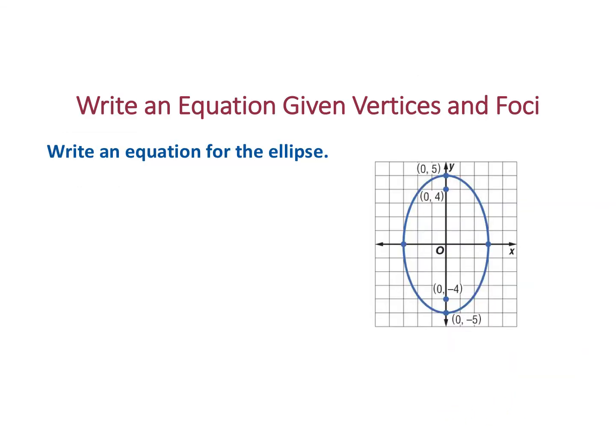So let's go ahead and write an equation for the ellipse. So first off, we have a center at (0, 0). So we can use x squared plus y squared equals 1 with the a squared and b squared under one of them. We don't know which one yet. But now that we look at this, it's orientated vertically.